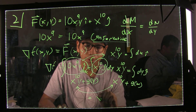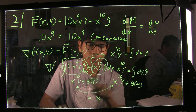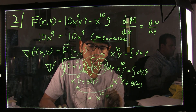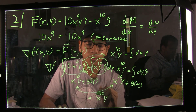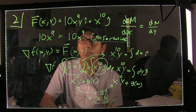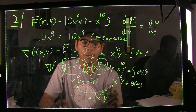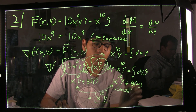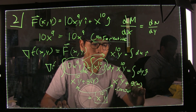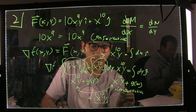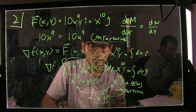After integrating and realizing there are no constants, our potential function is simply f(x, y) = x to the 10th multiplied by y. We've determined that the vector field is indeed conservative, and this is its potential function.